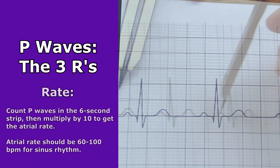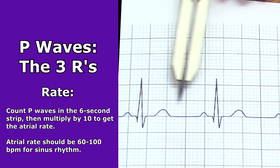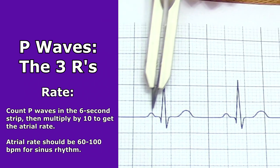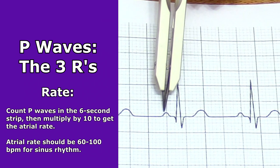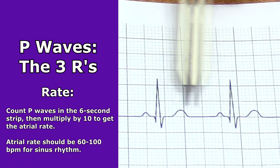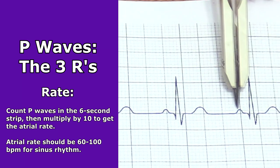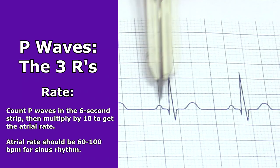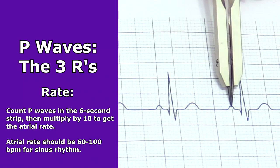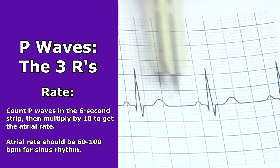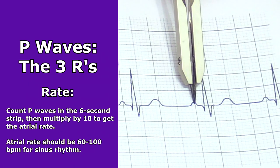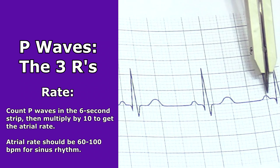Then look at the rate of those P waves. Count the P waves within that six-second strip, then multiply by 10 — this gives you the atrial rate. The atrial rate should be around 60 to 100 beats per minute for normal sinus rhythm.